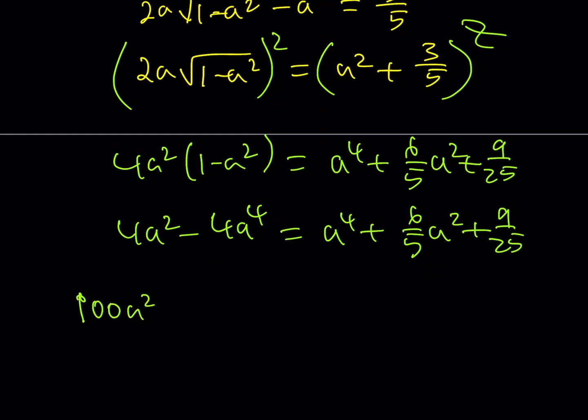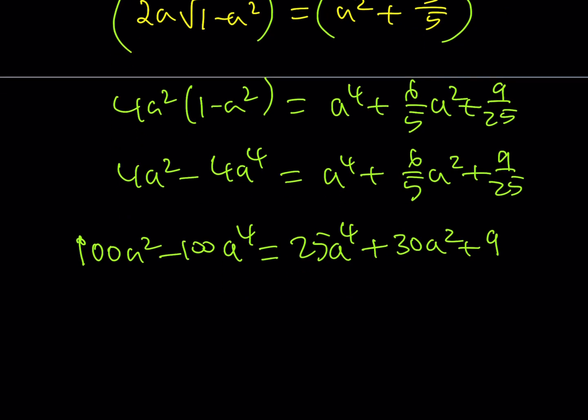So it's going to give me 100a² - 100a⁴. On the right hand side I'm going to be multiplying by 25 as well. So that should be 5 times 6 which is 30a² and this should be a 9. Let's go ahead and put this all together. I'll get 125a⁴ from these two and then -70a² + 9 = 0.